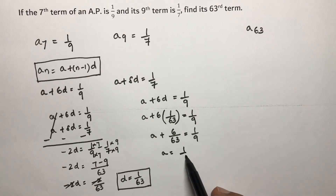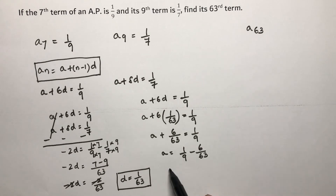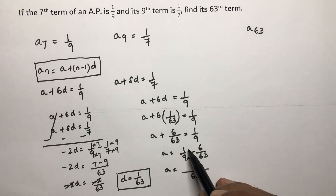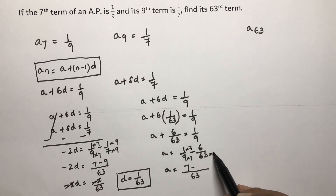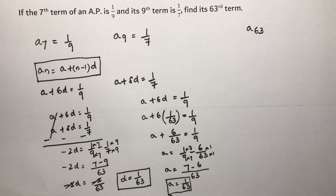So a + 6/63 = 1/9. Therefore a = 1/9 minus 6/63. The LCM of 9 and 63 is 63, so 1/9 = 7/63. Thus a = 7/63 minus 6/63 = 1/63. So a value is 1/63 and d value is 1/63.